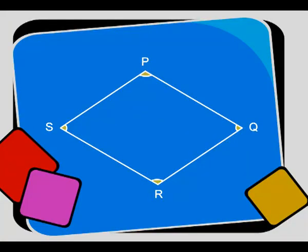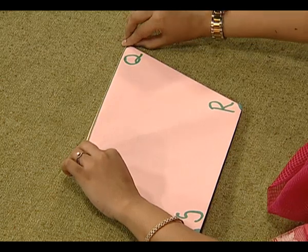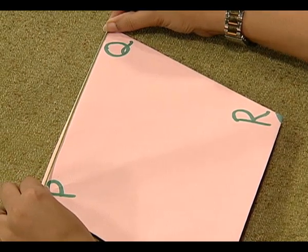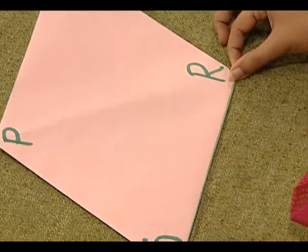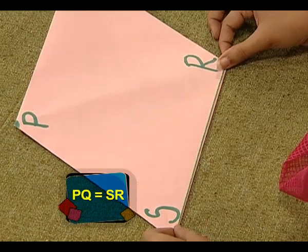This is a specific quadrilateral and we will find this out by exploring its properties. To do so, let's take a piece of thread and place it on PQ, and cut this piece of thread equal to the length of PQ. Now place this piece of thread on SR. What is observed? It is observed that PQ and SR are equal in length.